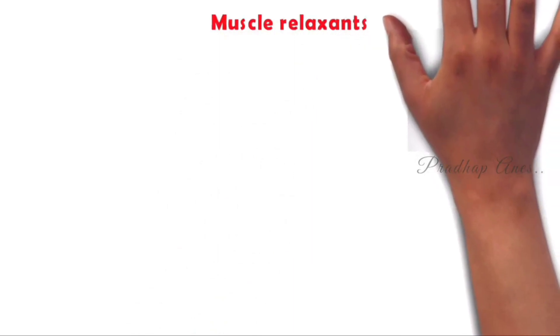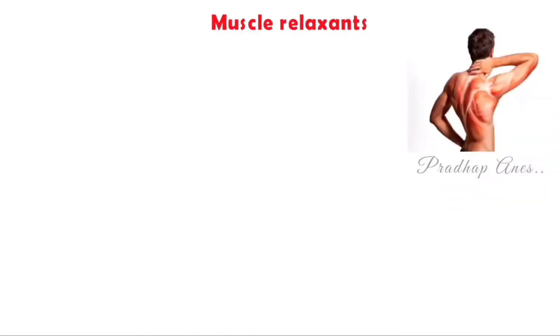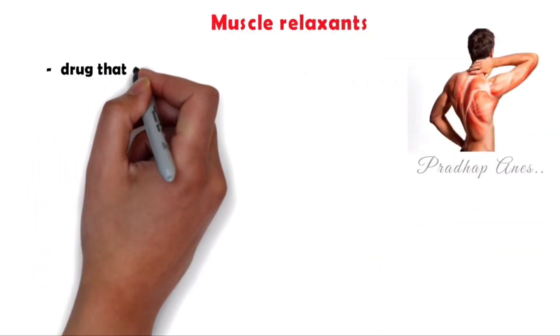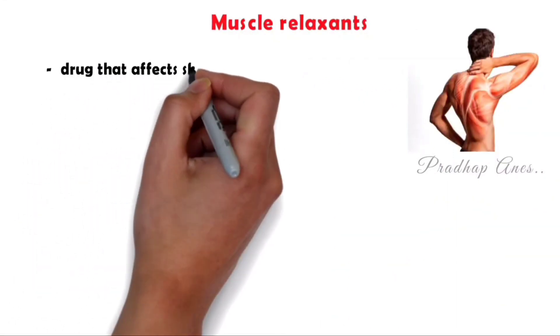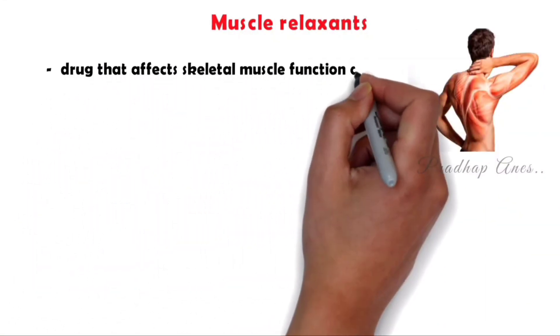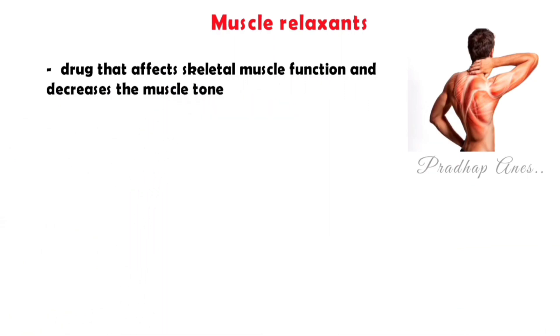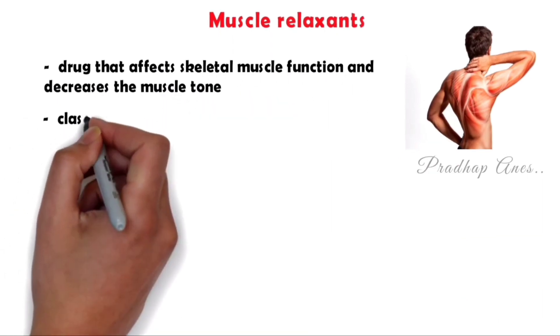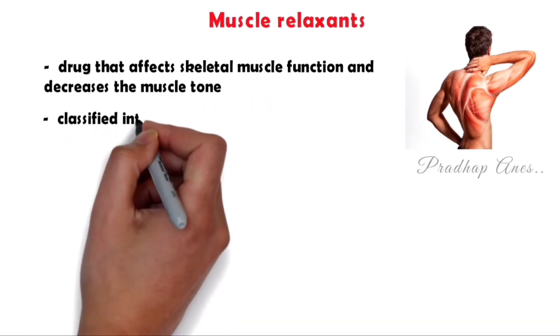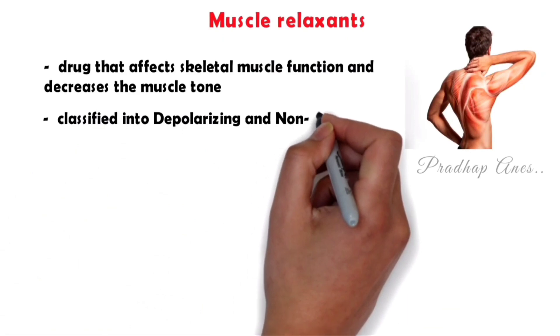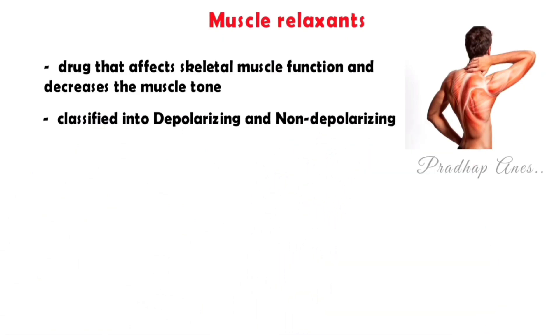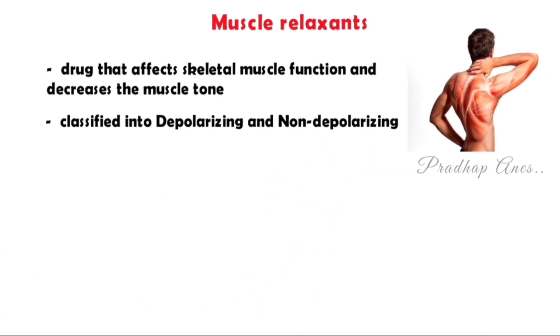First, we will have a small recall about muscle relaxants. A muscle relaxant is a drug that affects skeletal muscle function and decreases muscle tone. According to the mechanism of action, muscle relaxants are classified into two: depolarizing muscle relaxants and non-depolarizing muscle relaxants.